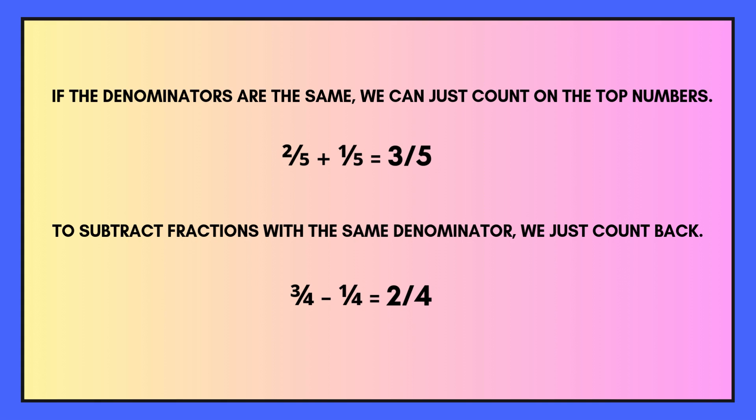If the denominators are the same, we can just count on the top numbers. So you can see here we've got 2 fifths plus 1 fifth, and all we need to do is 2 plus 1. 2 plus 1 equals 3, and we know the denominator is 5, so the answer is 3 fifths.